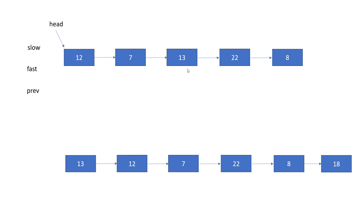The same applies in the case of even nodes. Slow moves one position, fast moves two. Then fast tries to move two more positions but fast.next.next is null, so it cannot. At that point, slow is at the middle node — which is correctly identified as our middle node.